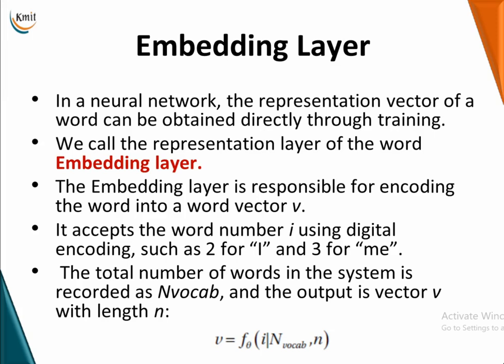Before the actual neural network, what you fit is an embedding layer. The embedding layer is responsible for encoding the word data into a word vector. You are not using one-hot encoding; instead, a separate embedding layer gives you a word vector. It accepts the word number i using integer encoding — such as 2 for one word, 3 for another — and automatically generates word vectors. The total number of words required is n_vocab, and the output is a vector of fixed length N.